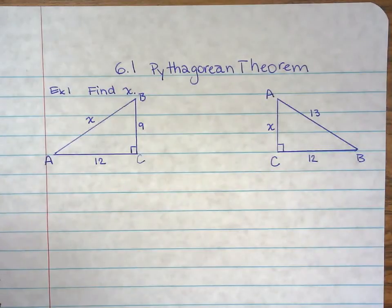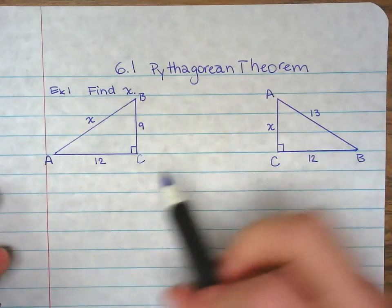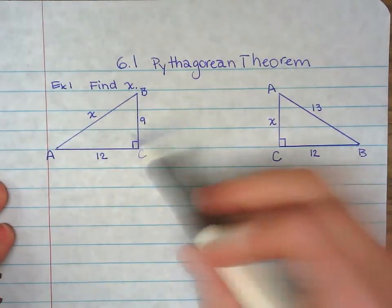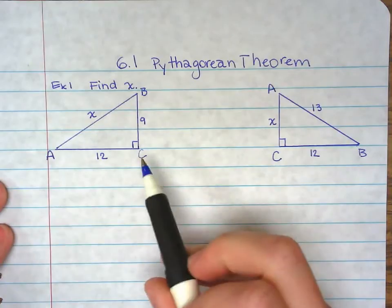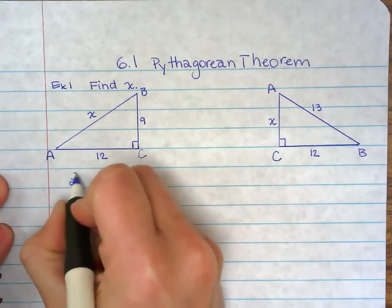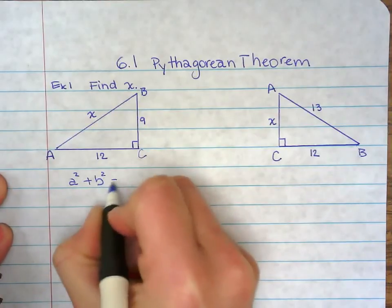I want to add two more examples to 6.1, two where you have to use the Pythagorean Theorem to find x. Let's work on this first one. Remember that the Pythagorean Theorem is a² + b² = c².